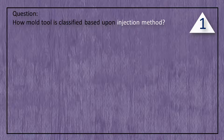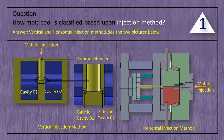Question: How is a mold tool classified based upon injection method? Answer: Vertical and horizontal injection method. See the two pictures below.